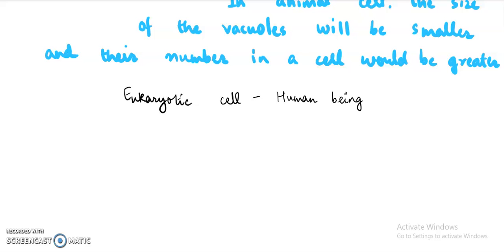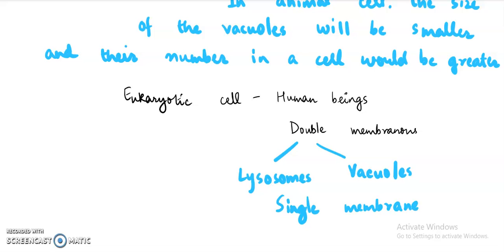In human beings majority of the cell organelles they are double membranous. Double membranous means they will contain two membranes. But the exceptions are lysosomes and vacuoles. Means in spite of being found in the eukaryotic cell they will always contain one membrane. And one membrane can also be written as a single membrane.